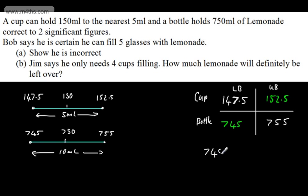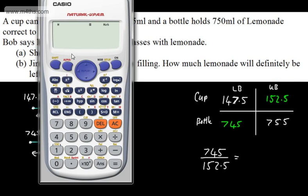So all we're going to do is divide 745 by 152.5. We've got 745, that is the amount of lemonade, dividing by 152.5. Let's go ahead and work that out on a calculator, and we need to show that this is going to be less than 5.